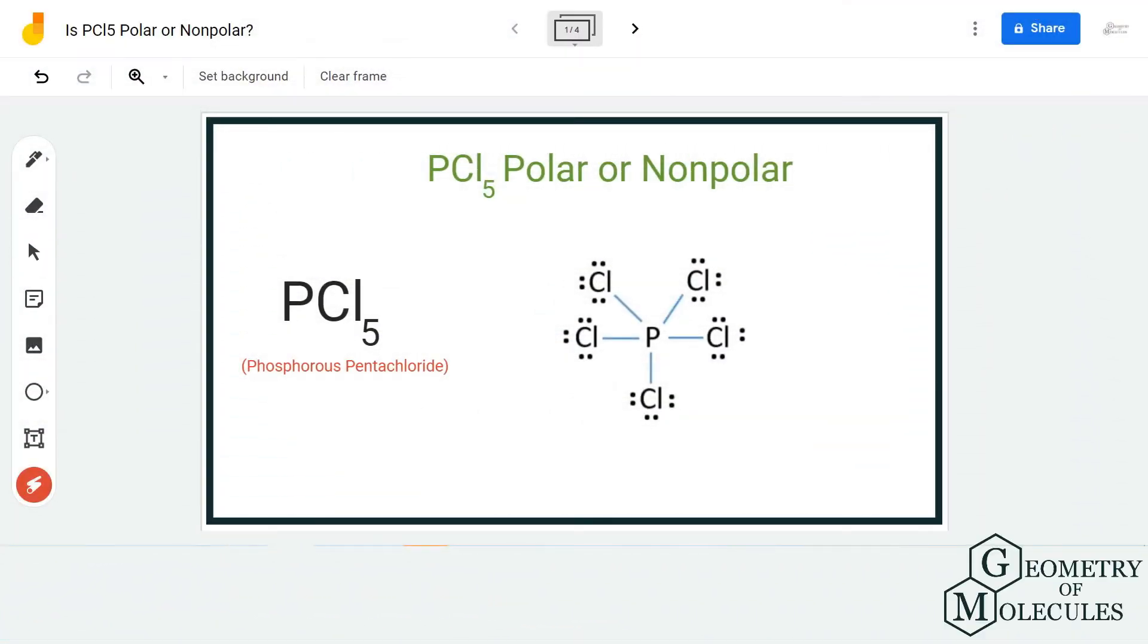Hi guys, welcome back to our channel. In today's video we are going to help you determine if PCl5 is a polar or non-polar molecule. It's the chemical formula for phosphorus pentachloride.